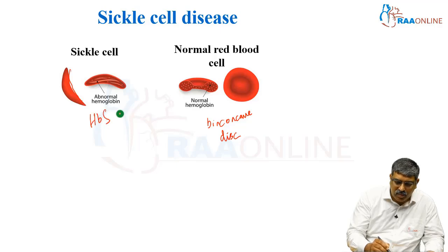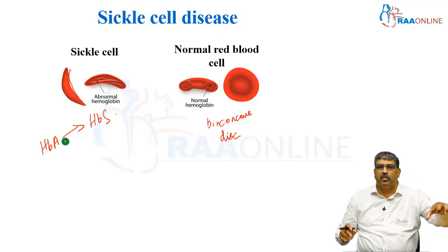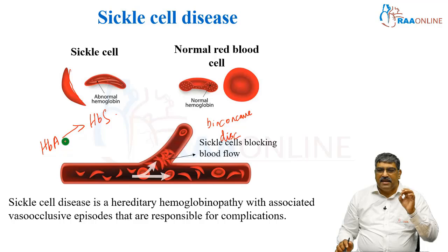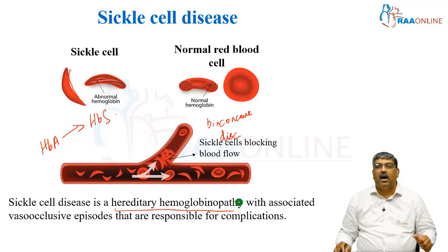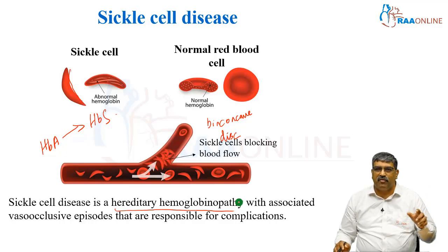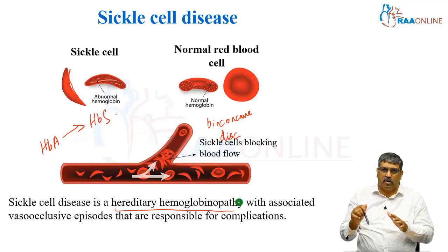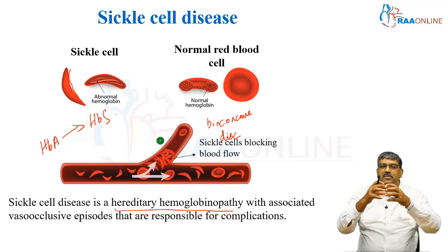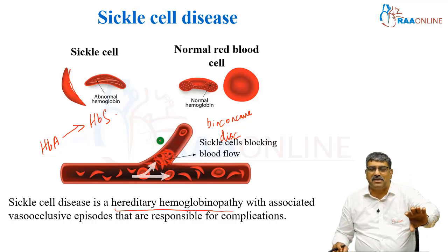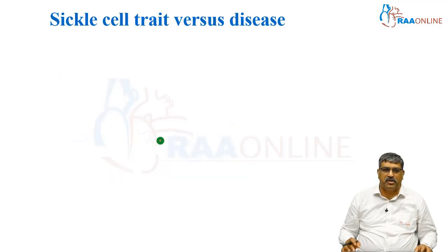What was hemoglobin A gets converted into hemoglobin S, that is hemoglobin sickle cell. This sickle cell is an irritatory hemoglobin of the body with associated vaso-occlusive episodes, commonly responsible for complications. The sickle cell clumps and occludes the blood supply to that particular organ, so you might have a vaso-occlusive episode.